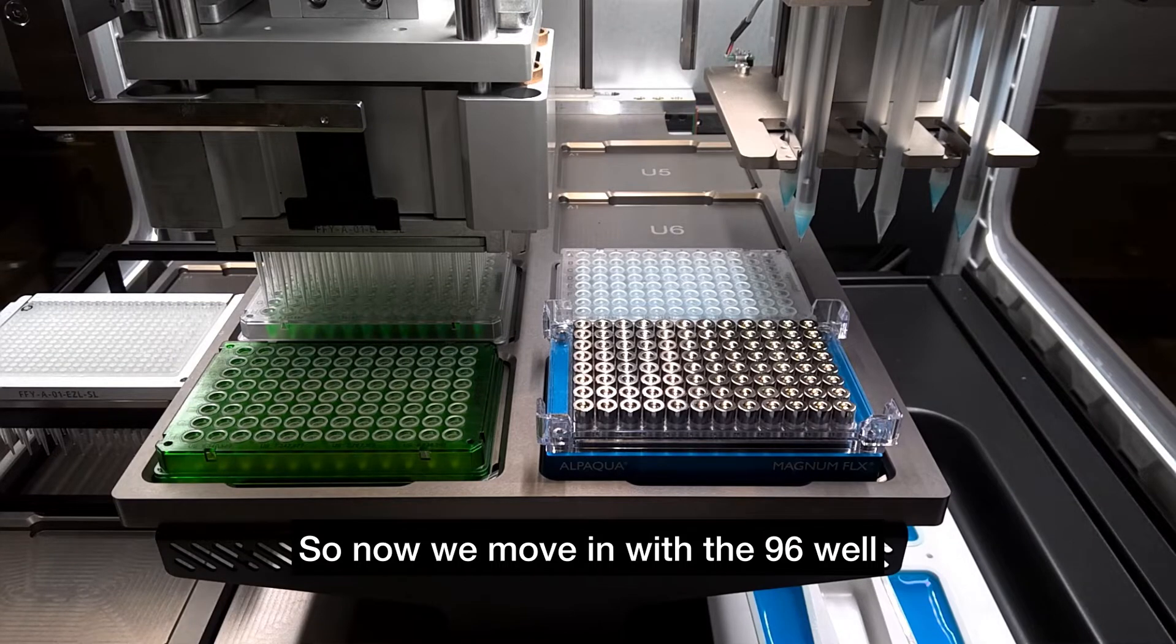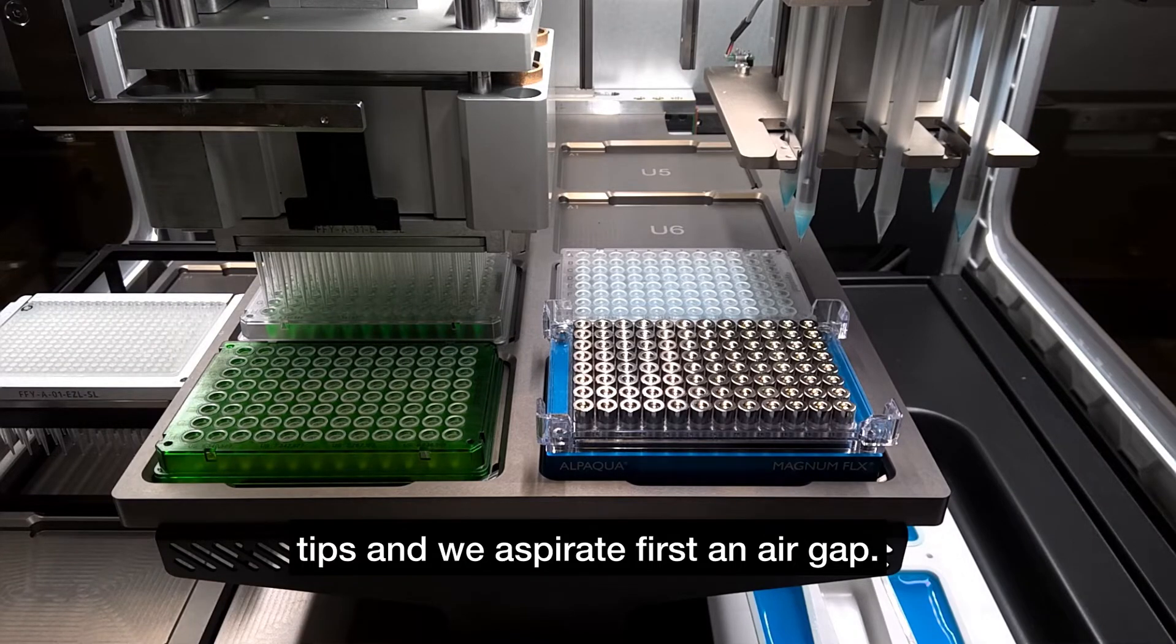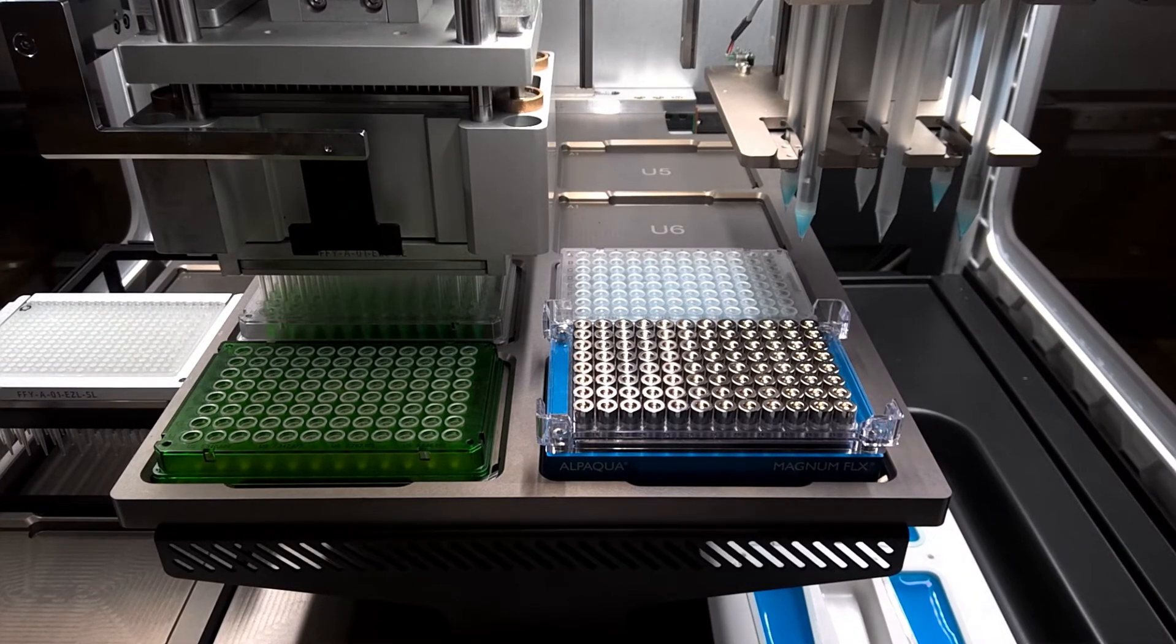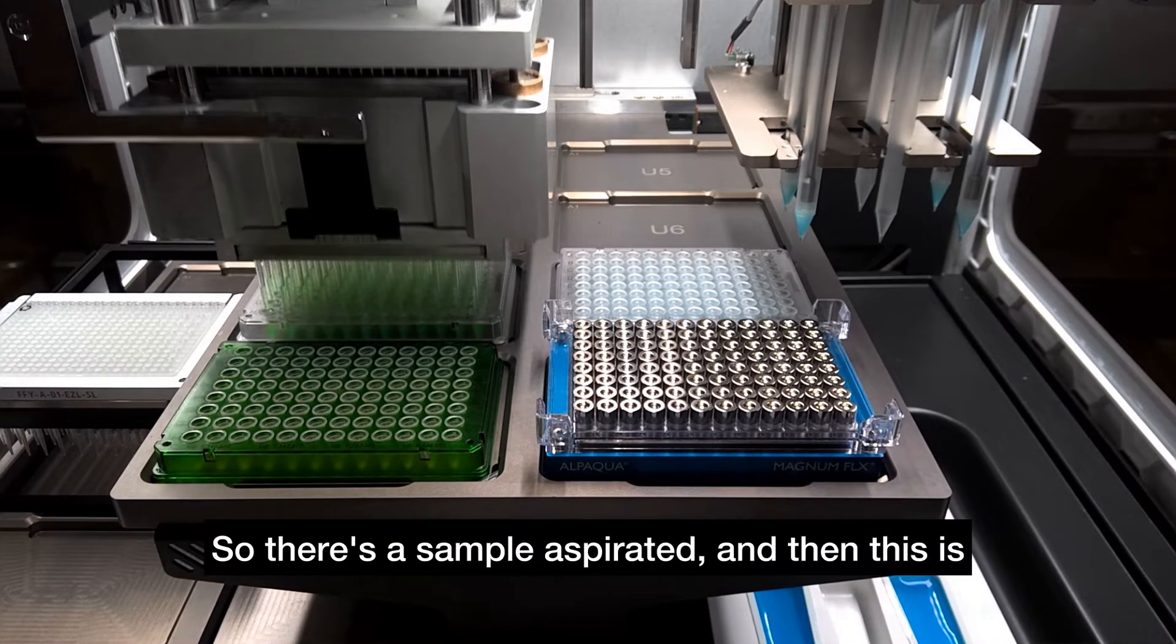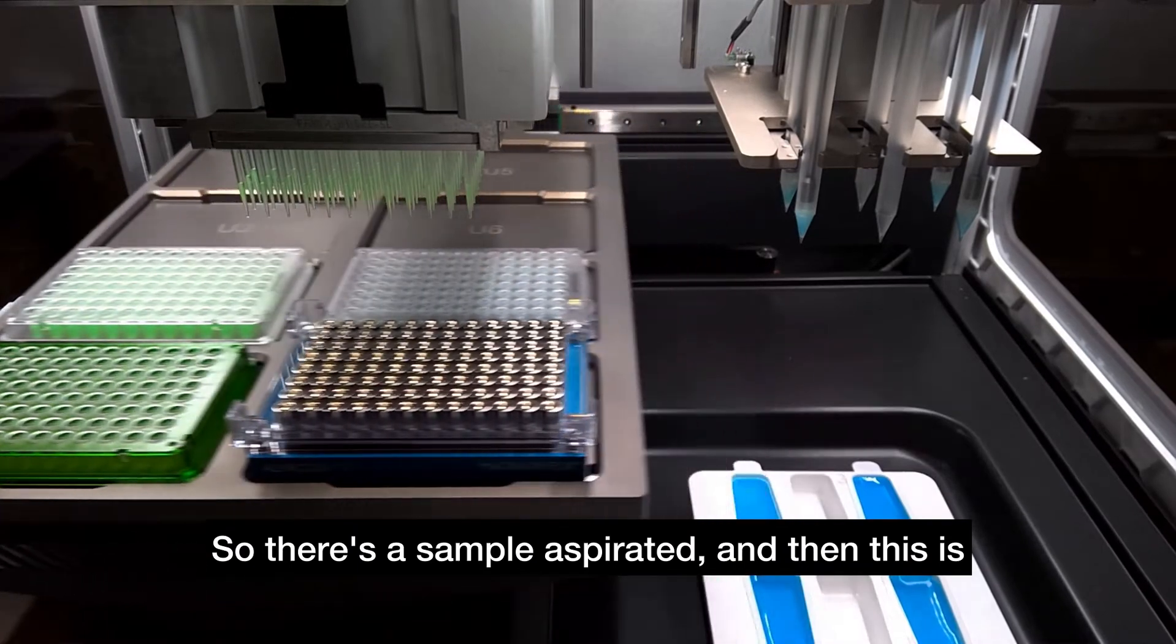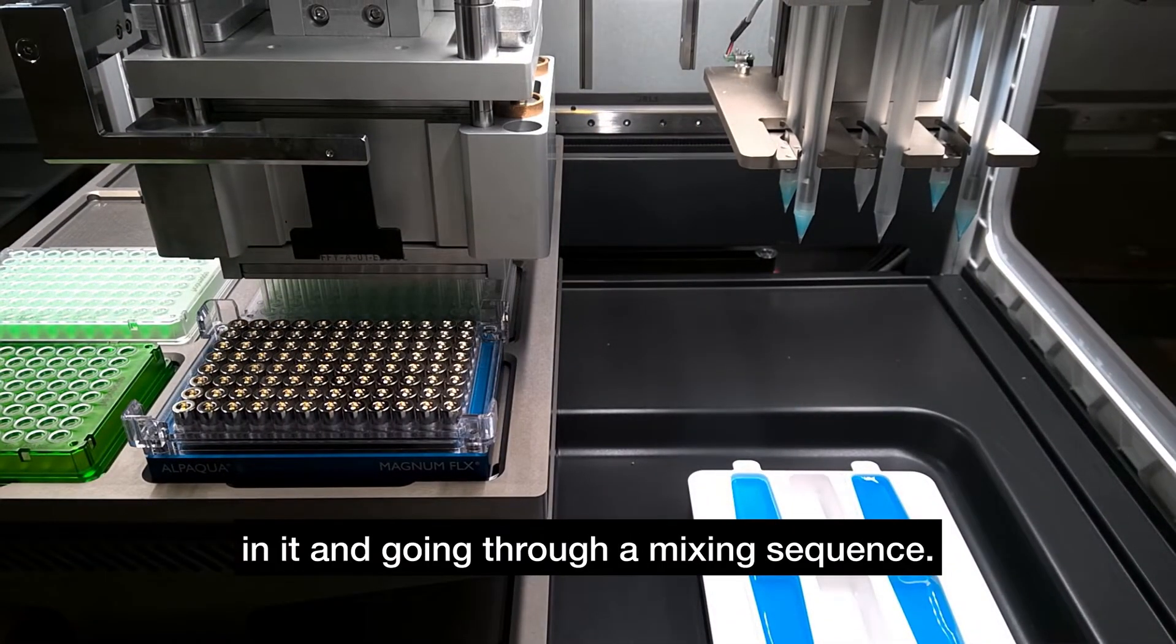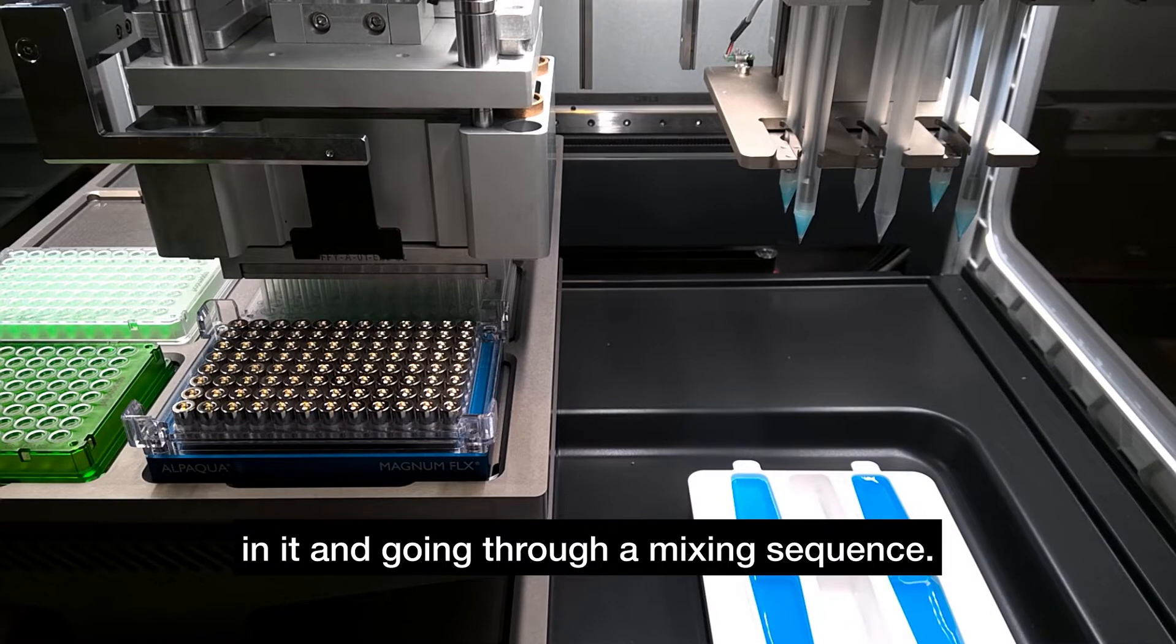So now we move in with the 96-well tips and we aspirate first an air gap, and then we'll be going back in to actually aspirate sample. So there's the sample aspirated. And then this is going over to the plate that has the beads in it and going through a mixing sequence.